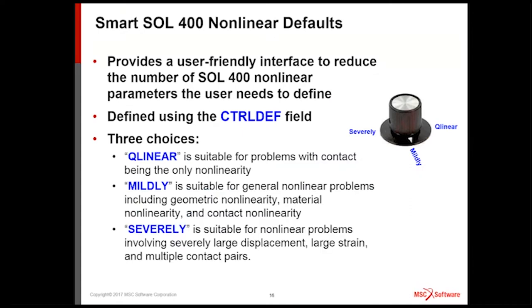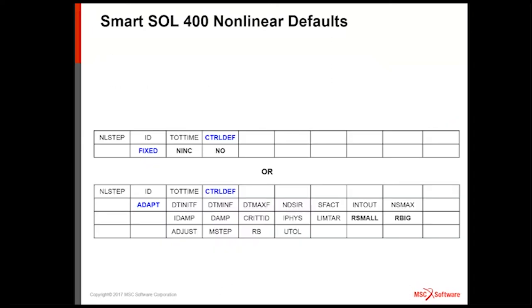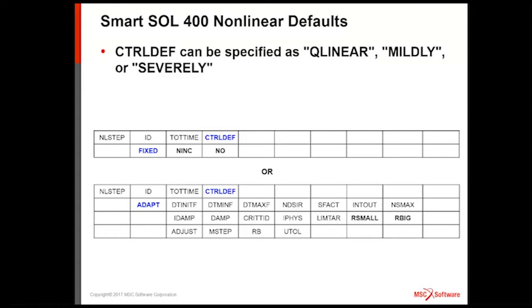SEVERELY, when things don't converge, or when you have very large displacement and large strain, go ahead and turn on severely. So look at the Nastran entry here. You can see the NLSTEP entry. Without showing you all the other continuation lines, you can see if you use the smart default, there's only one field you need to define. You pick QLINEAR, MILDLY, or SEVERELY, and then you can decide whether I want to attack it with fixed increments or adaptive increments.